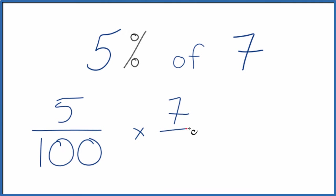But I'm going to call it 7 over 1 because 7 divided by 1 is still 7, but now the numerators and denominators line up.